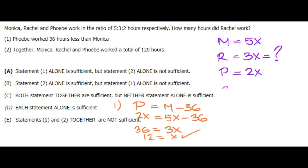Data 2 says that together Monica, Rachel and Phoebe worked a total of 120 hours. So that means 10x equals 120, so x equals 12. And as well as data 1, data 2 is sufficient.